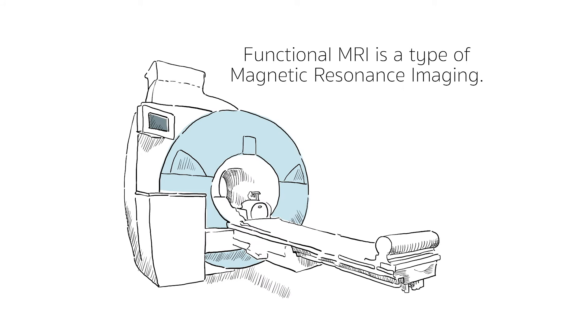Functional MRI is a type of magnetic resonance imaging or MRI. MRI uses a very big magnet inside a scanner to make images of the human body.